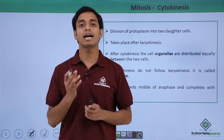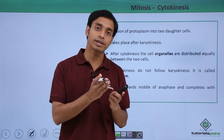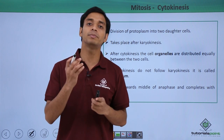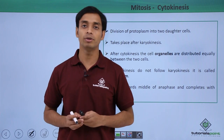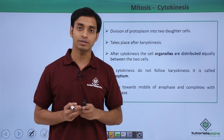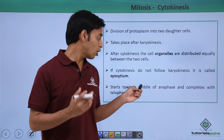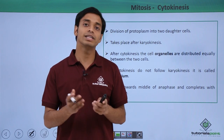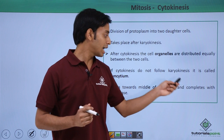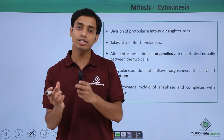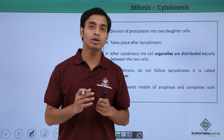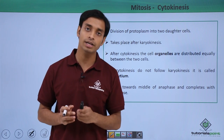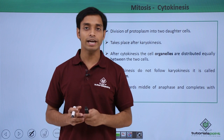Sometimes it happens that cytokinesis is not occurring but karyokinesis has already occurred. In this case, we get cells which have multiple nuclei. So multi-nucleated cells will be formed, and this phenomenon is known as syncytium. The process of cytokinesis starts along with the middle phase of anaphase, continues with the karyokinesis process, and gets completed along with telophase. So cytokinesis is not a separate process — it happens simultaneously with karyokinesis.